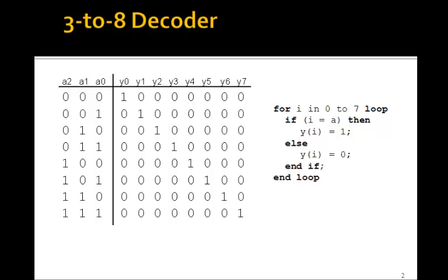Now the only problem we're going to run into is that i is an integer going through this loop, and we want to check if it's equal to a, but a is the input which is a standard logic vector. So we'll need to convert this standard logic vector to an integer. Let's see how to do that.